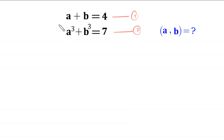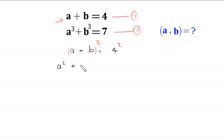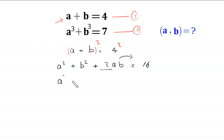First, we take a square of both sides of equation 1. Equation 1 is a plus b is equal to 4. This (a plus b) whole squared will become a squared plus b squared plus 2ab is equal to 4 squared, which is 16. Moving 2ab to the right hand side, this becomes a squared plus b squared is equal to 16 minus 2ab. Let us call this equation 3.